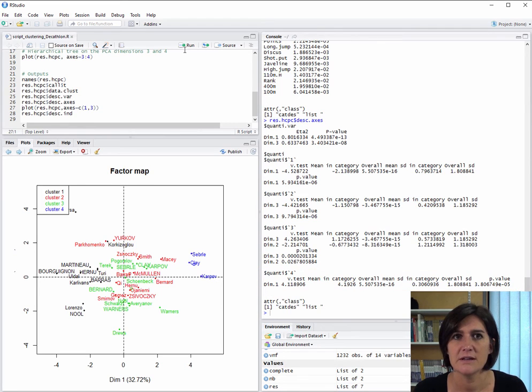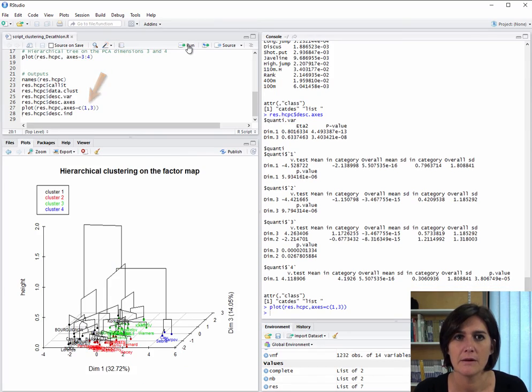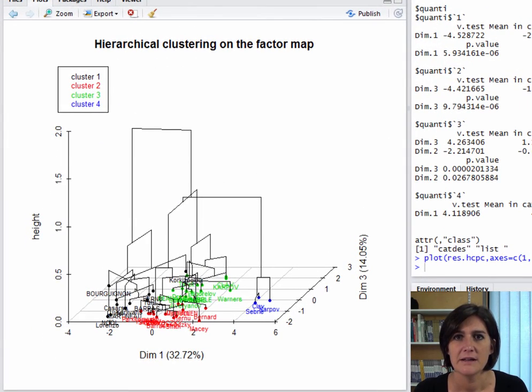Having seen all these, it makes sense to show the hierarchical tree using the plane defined by the first and third dimensions, which is what we do here. We can see clearly that when we show the hierarchical tree on the 1-3 plane, the classes are really well separated.